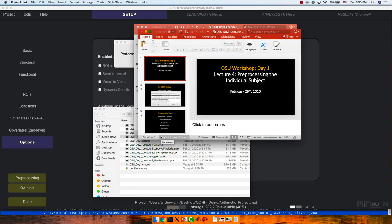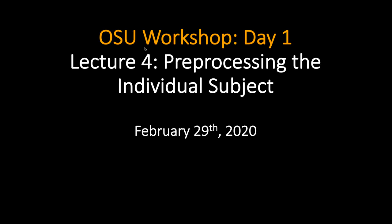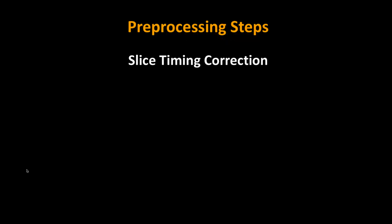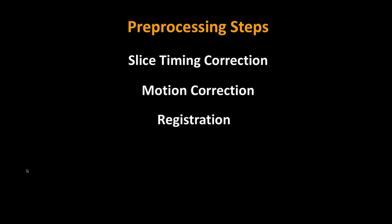While the preprocessing is running, let's ask: what exactly is it doing and why? The default preprocessing pipeline works in virtually all cases — you really need to know what you're doing to select something aside from that. The major steps are: slice timing correction, motion correction, registration, normalization, and smoothing.